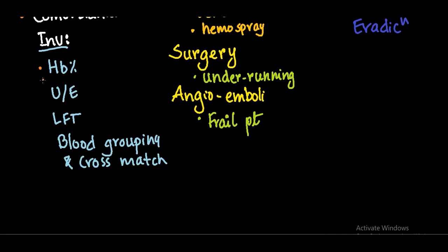Investigations include hemoglobin — if the patient is bleeding, hemoglobin can be low. Urea and electrolytes: high urea suggests massive bleeding and there may be electrolyte abnormalities. Liver function tests may be abnormal, especially in variceal bleeding. Do blood grouping and cross-matching; have at least two units of blood ready if the patient is in shock or has severe bleeding.